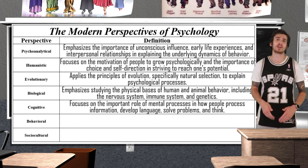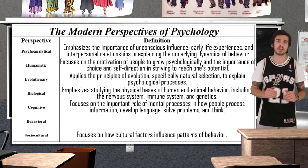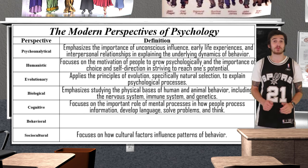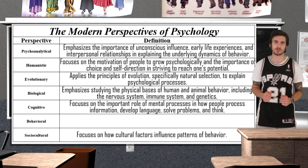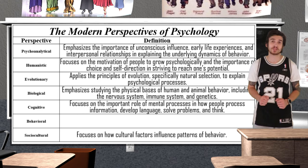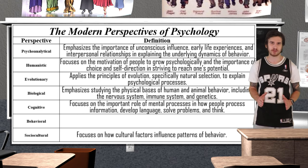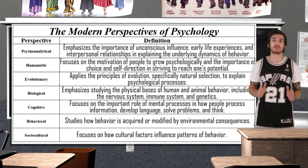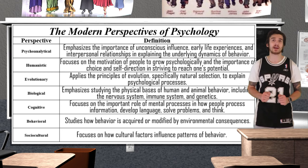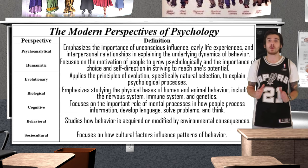A sociocultural psychologist looks into how social influences affect individual behavior. For instance, a sociocultural psychologist might look into beauty standards in the U.S. and link them to eating disorders such as bulimia and anorexia. The behavioral perspective stems from the research of Ivan Pavlov, John B. Watson, and B.F. Skinner. It focuses on how behaviors are acquired and modified by observable environmental conditions. A behavioral psychologist might say that an individual has a phobia of spiders because they learned this trait at a young age while watching their mother being terrified of spiders.